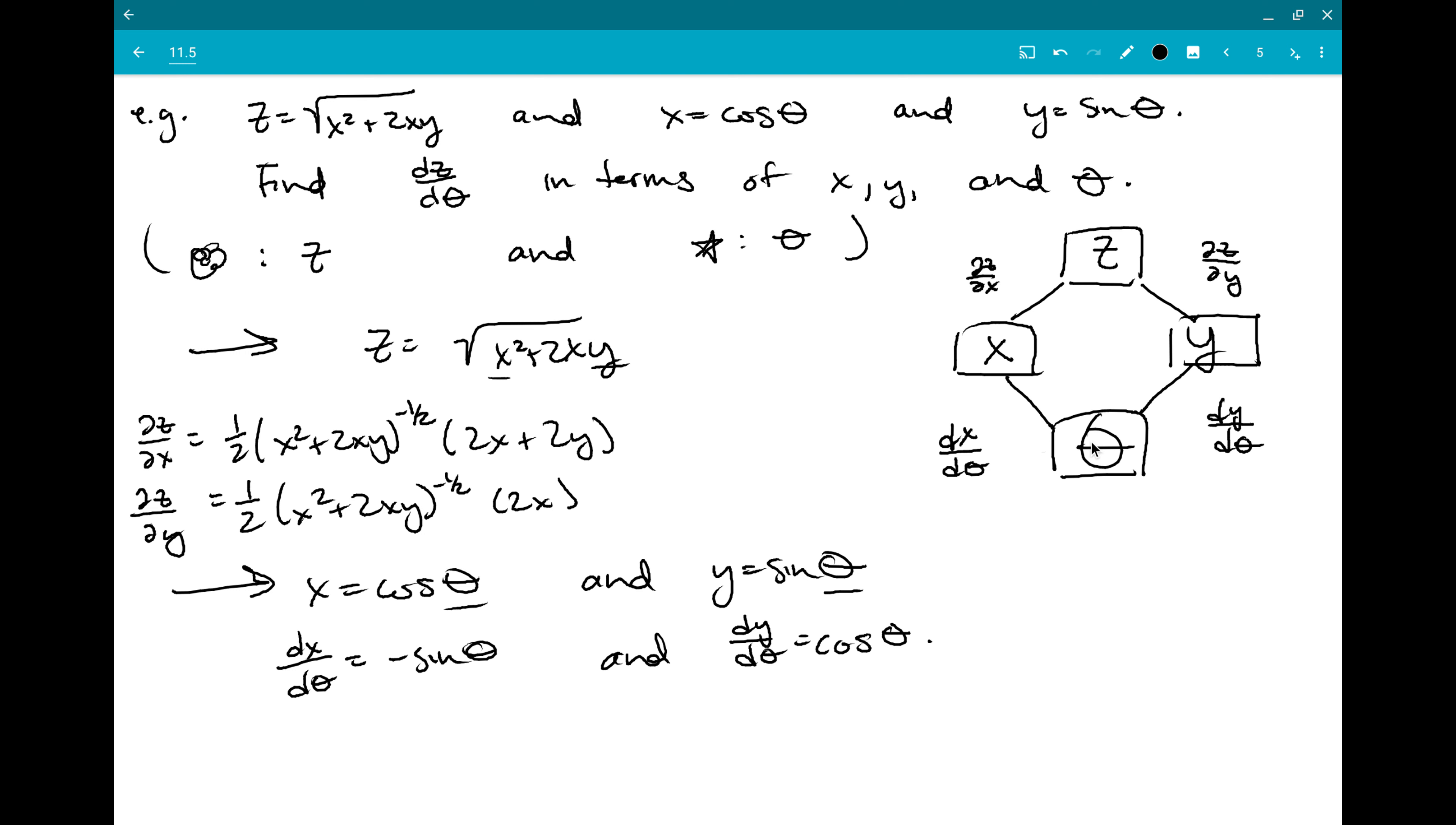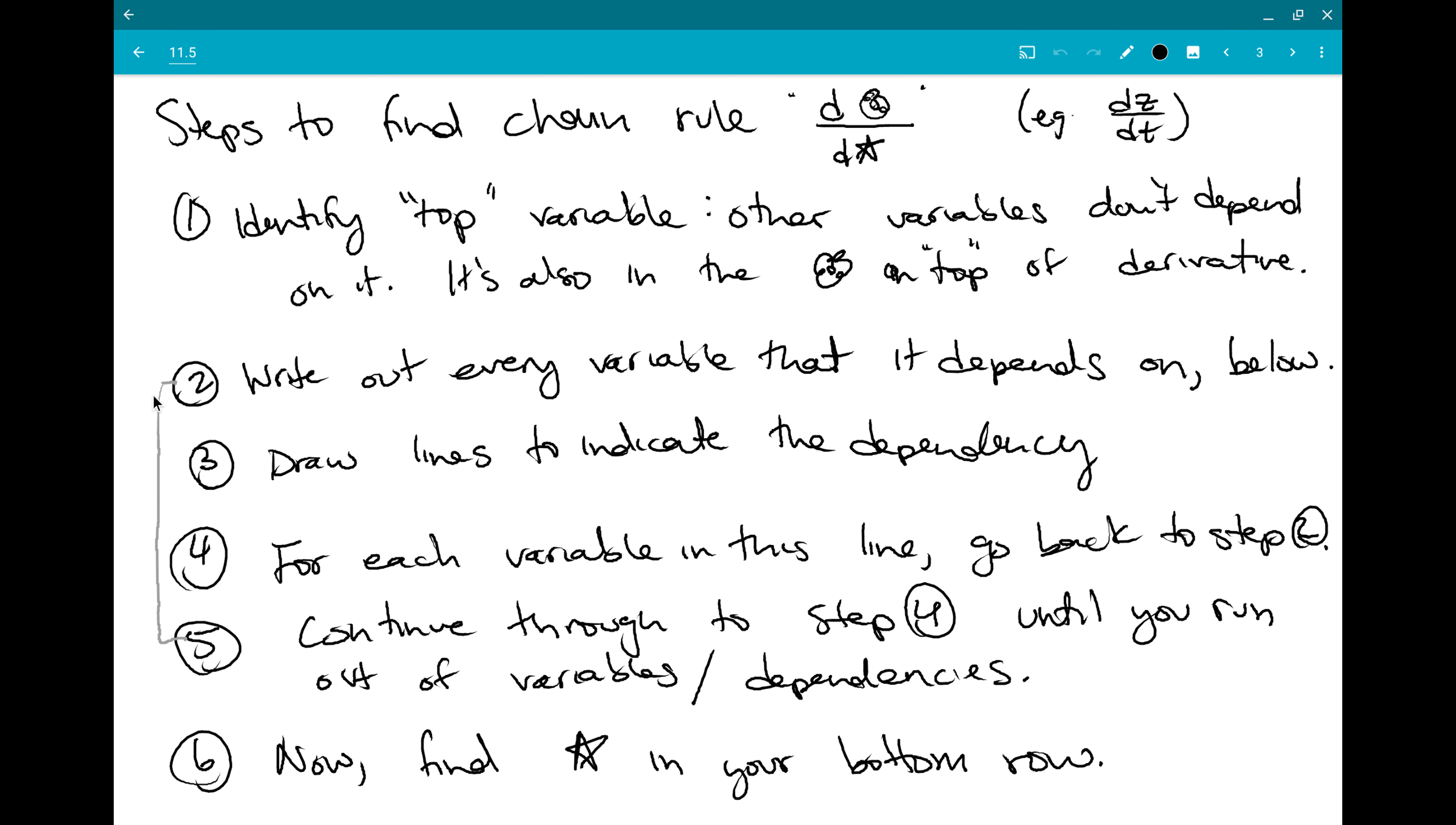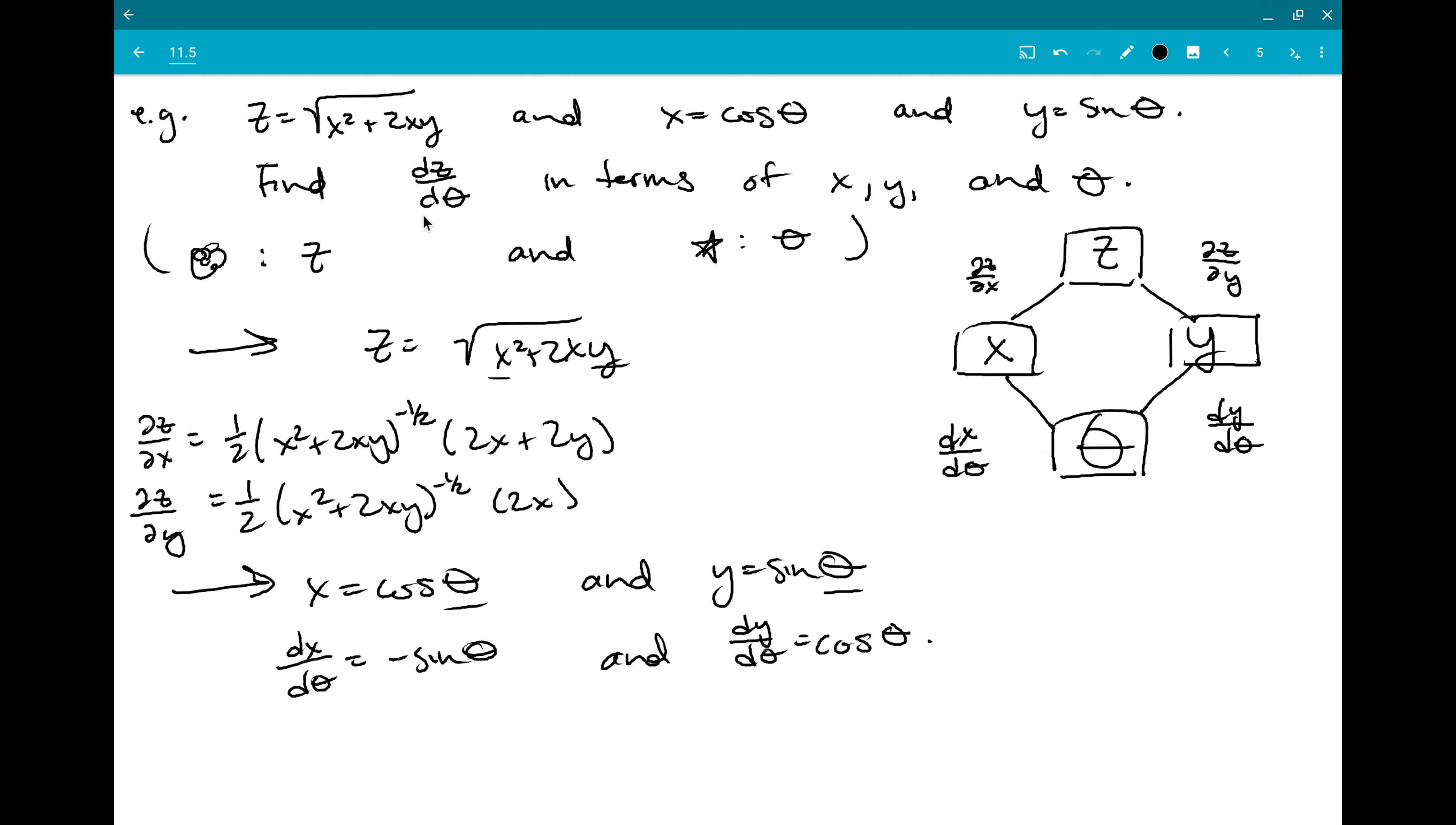And now comes the actual chain rule part. So all this was just making that diagram that tells me all the relationships. And I have to find my star, the thing in the bottom of my derivative, in the bottom row. Happens to be the only thing. And I try to reach it from my derivative at the top. Or sorry, my variable at the top. So I can do it along this path. Or I can do it along this path.